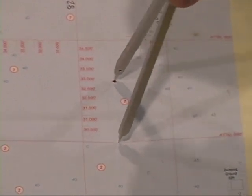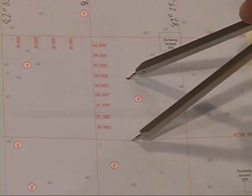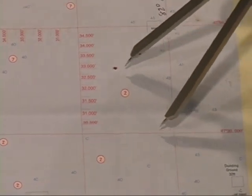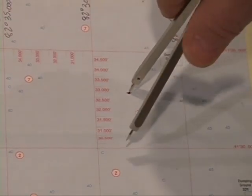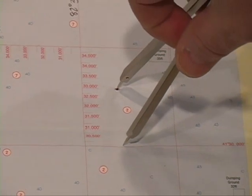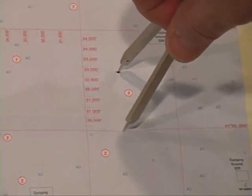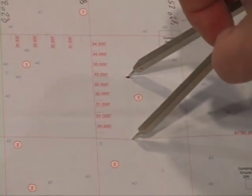See how my dividers are straight up and down from my unknown point? If you measure on an angle you're going to get the wrong reading. So, always make sure your dividers are perfectly perpendicular 90 degree angle to your reference point.